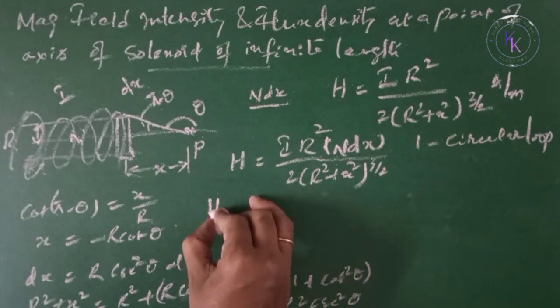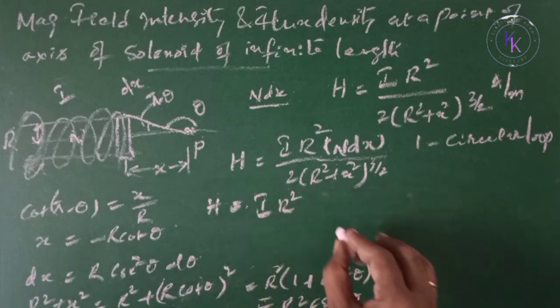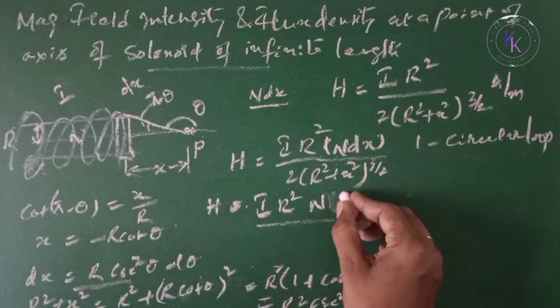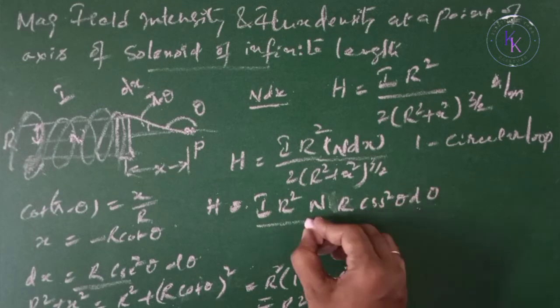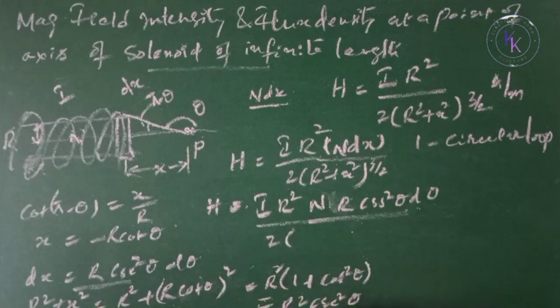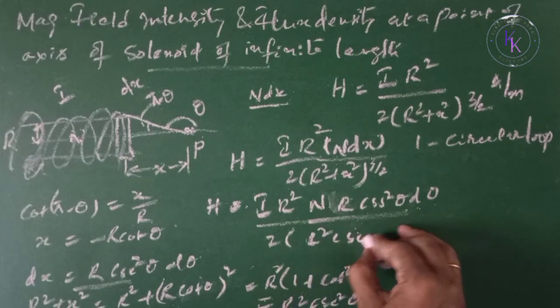In the above formula we are going to get H equals to I R squared N times R cosecant squared theta d theta divided by 2 times (R squared cosecant squared theta)^(3/2).